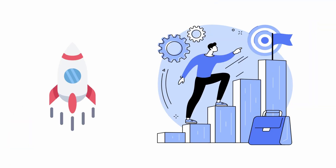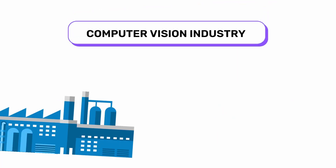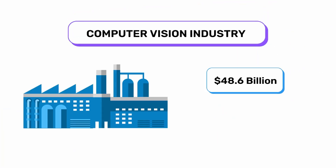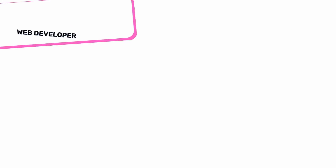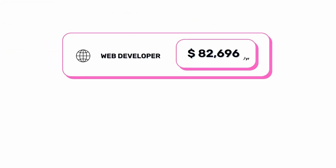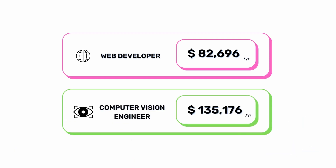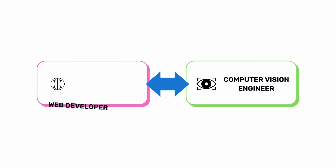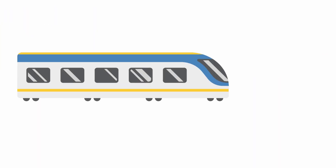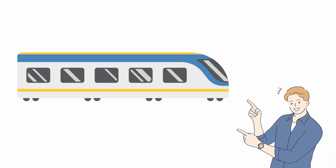This course is meant to boost your career to new heights. The computer vision industry is expected to be worth $48.6 billion by 2025. With the average salary of a web developer being $82,000 and for a computer vision engineer being $135,000 in USA, the merger of both these technologies is a deadly combination that will soon be in great demand. So it's best to get on this train in the early stages.